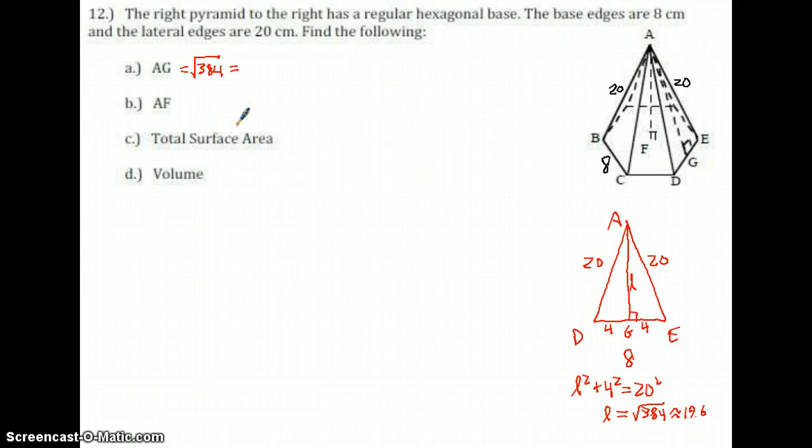384 should have some square factors, though. 384 divided by 4, divided by 4 again, divided by 4 again. So it turns out that this is 8 times the square root of 6 from my calculations.